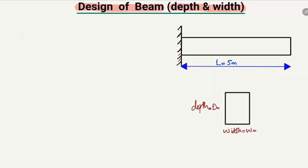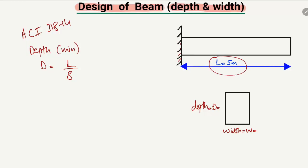According to the ACI code — American Concrete Institute ACI 318-14 — it states that the minimum depth of the beam for a cantilever beam is equal to L/8, where L is the length of the beam divided by 8. So with L = 5 meters, we get 5 divided by 8.